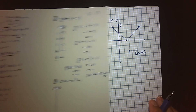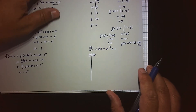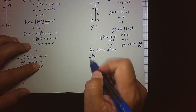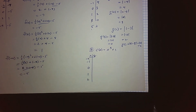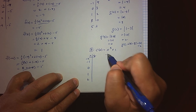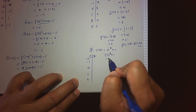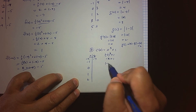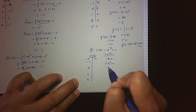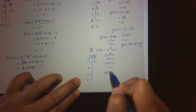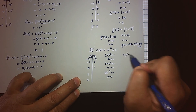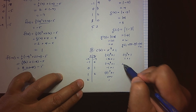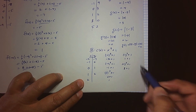One more — the cubic function x-cubed plus 1. Let's try a few values: negative 2, negative 1, 0, 1, and 2. Plugging in negative 2: negative 8 plus 1 is negative 7. Plugging in negative 1: negative 1 plus 1 is 0. Plugging in 0 gives 1. Plugging in 1 gives 2. Plugging in 2 gives 9.